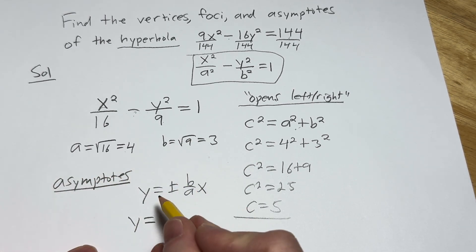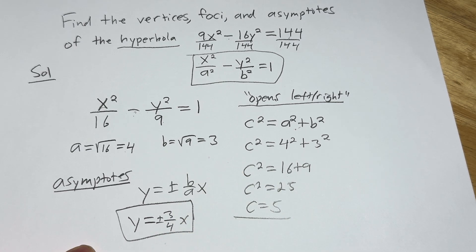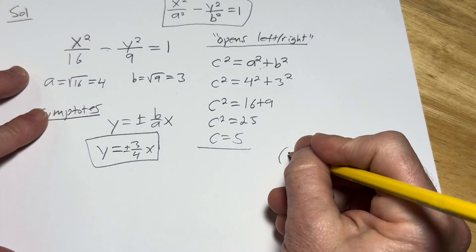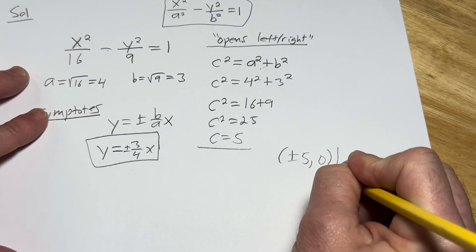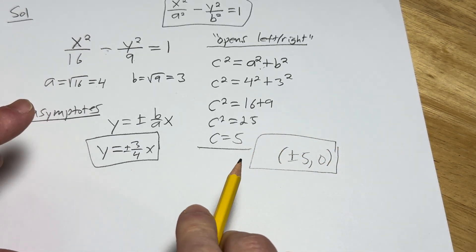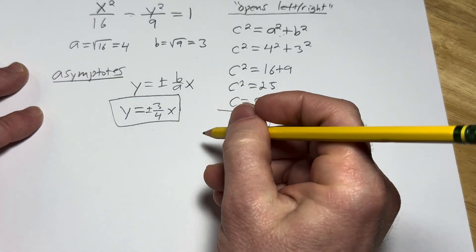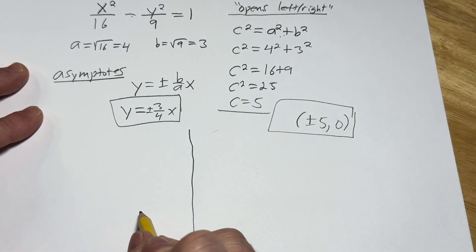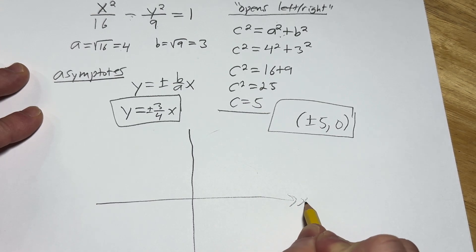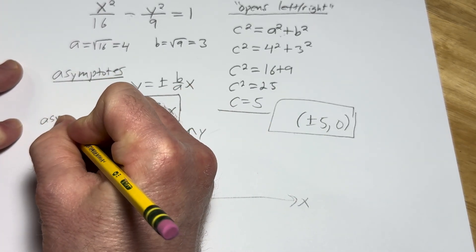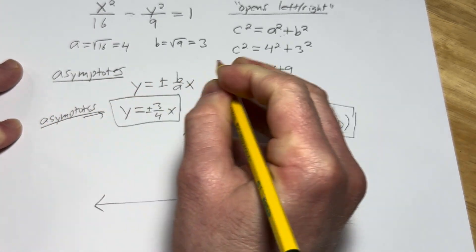Let's plug these in and get our asymptotes. So it'll be 3 over 4 and then our plus or minus and our X. Let's go ahead and write down the foci now. So the foci are going to be plus or minus 5 comma 0. You might say, how did you know that? It's because it opens left and right. Let's graph it and I'll show you exactly what the foci look like on the graph. So here's the Y axis, here's the X axis. We're going to come back to this. These are the asymptotes. I'm going to explain that again, no worries.